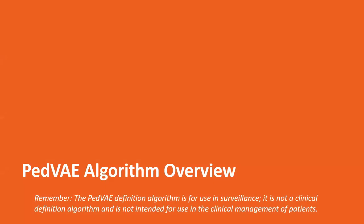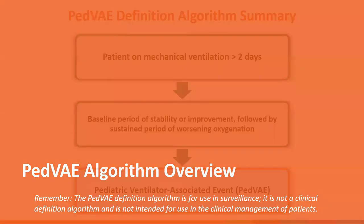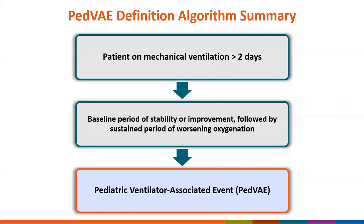Let's review the PVAE algorithm. As a disclaimer, the PVAE algorithm is for use in surveillance — it is not a clinical definition algorithm and is not intended for use in the clinical management of patients. The algorithm is a single tier. The patient must be on the ventilator for at least two days, and then you're looking for a baseline period of stability or improvement immediately followed by a sustained period of worsening oxygenation. If that is met, you have identified a PVAE.